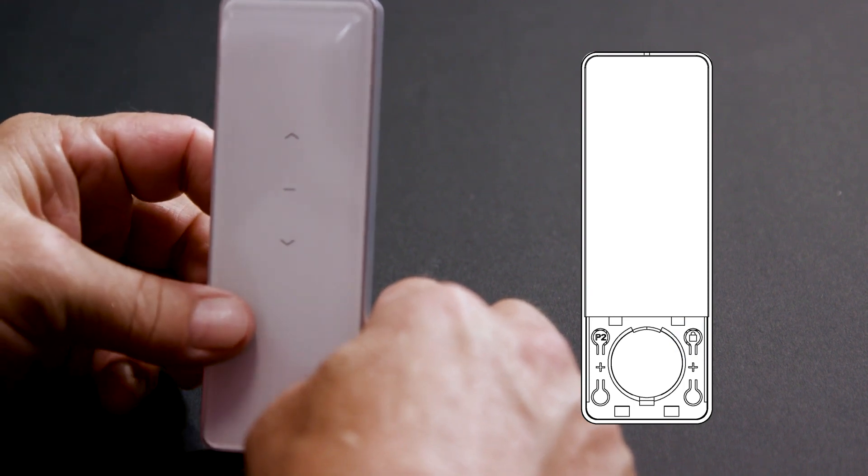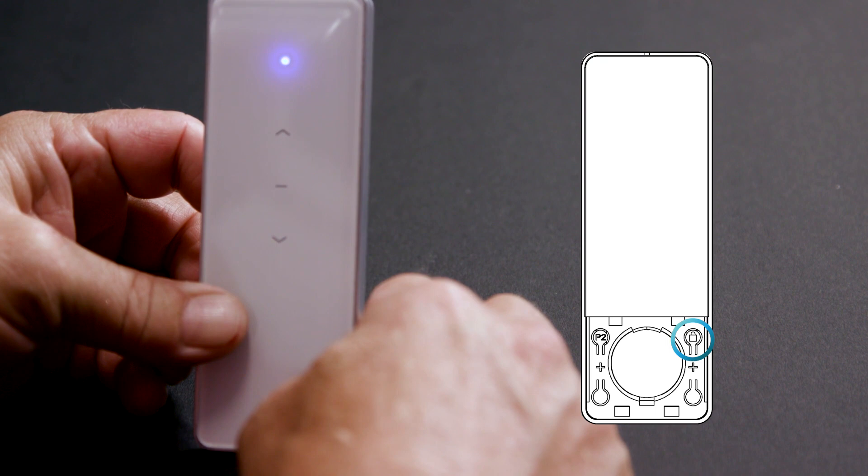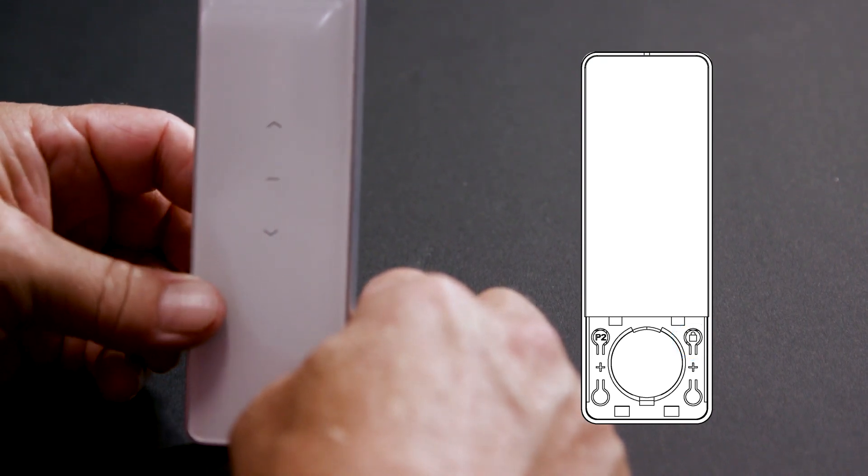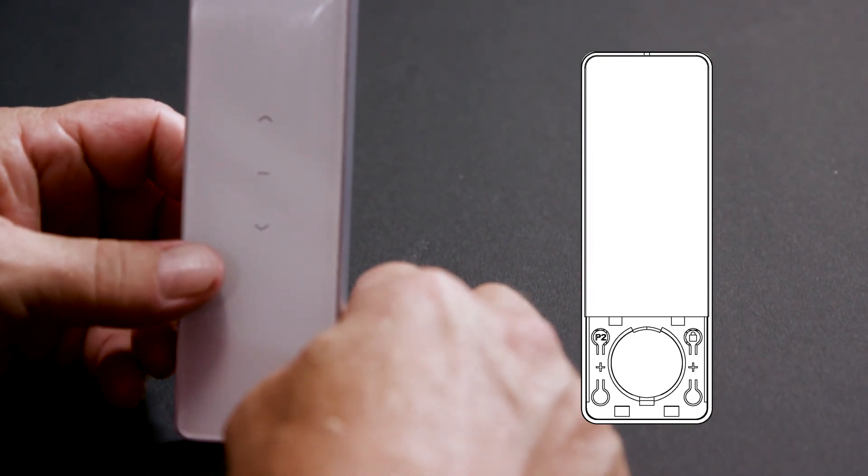To change back to unlocked, press and hold the lock button for 5 seconds. The LED will switch back from constant light to flashing light. The flashing light means that the remote is unlocked.